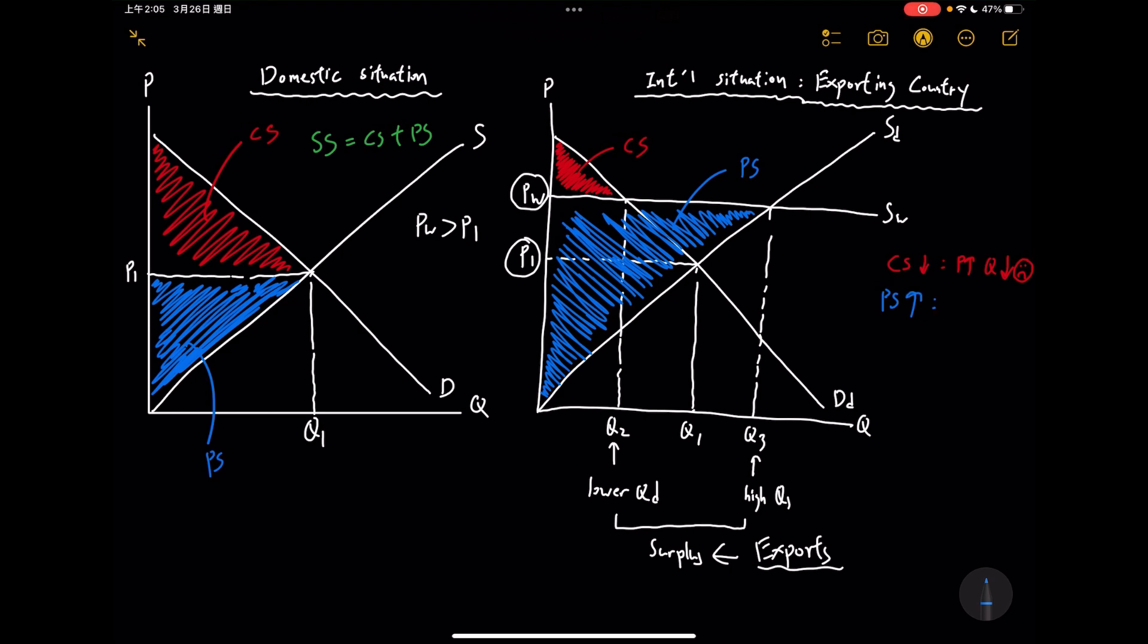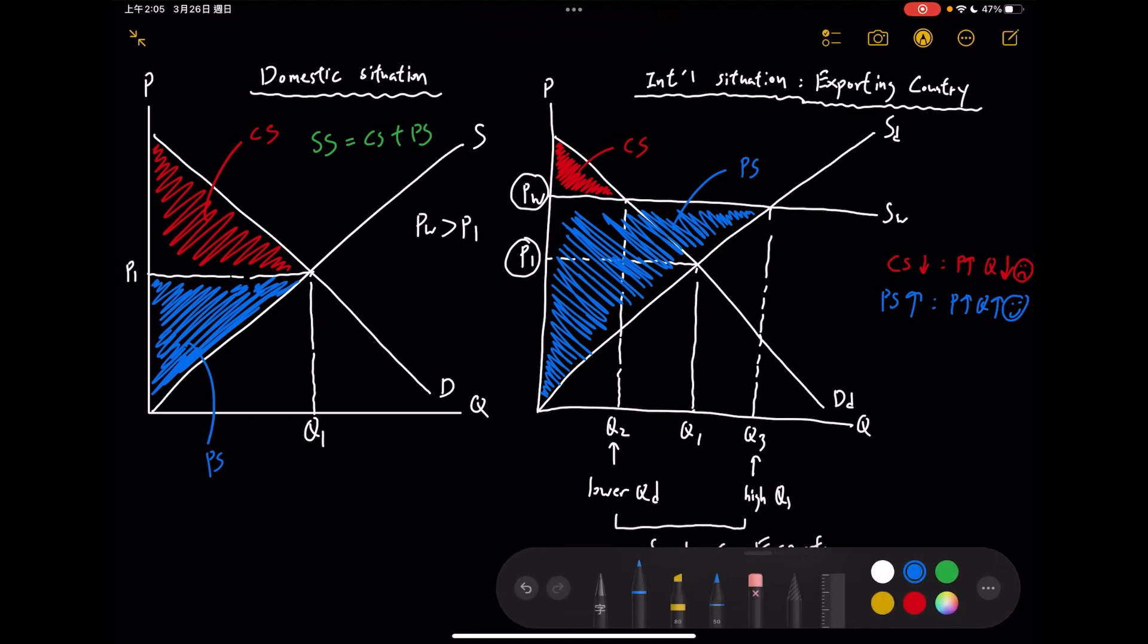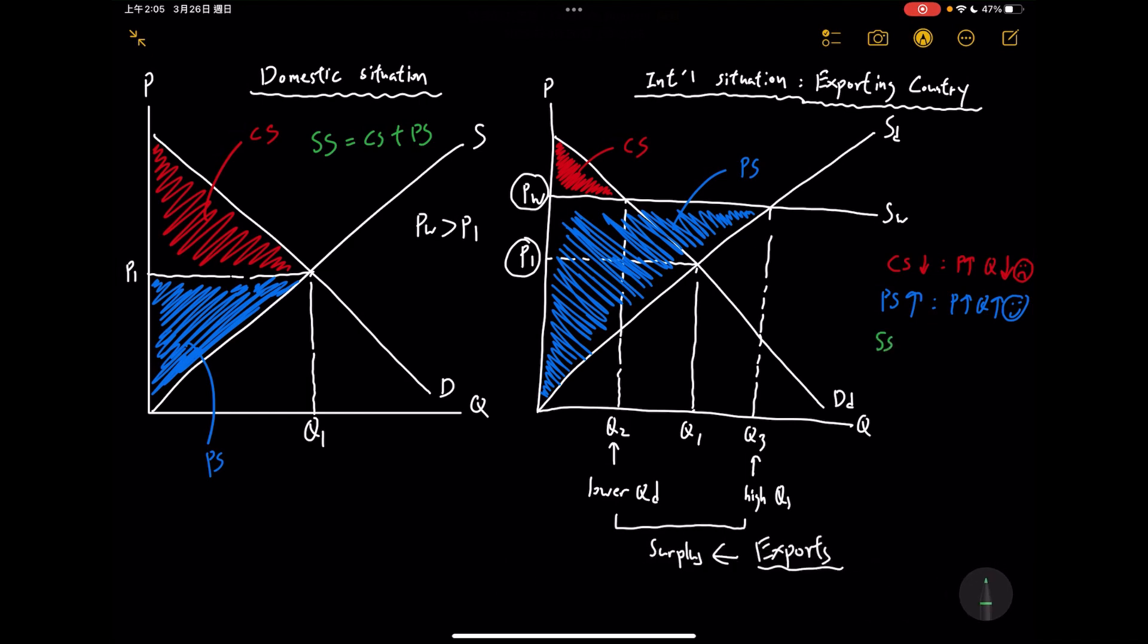Before I write this down, I'm just going to finish what would happen to the PS as well. PS right here, you can see, comparing to the domestic situation, definitely it is increasing. We can also use the change in P and Q to explain this: P is increasing, producers love it, and quantity in this case is also increasing from Q1 to Q3. How great is that? They will be so happy in this case. For SS, you can also see that compared to the domestic situation, SS is also increased.